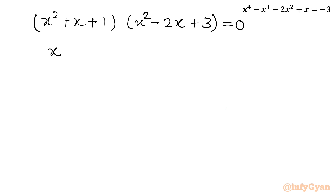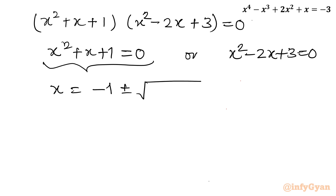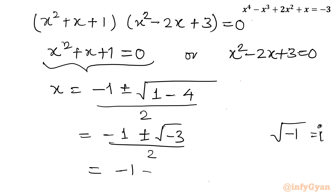Because the product is 0, either x² + x + 1 = 0 or x² − 2x + 3 = 0. Applying the quadratic formula to the first equation: x = (−1 ± √(1 − 4)) / 2 = (−1 ± √(−3)) / 2. Since √(−1) = i, this gives x = (−1 ± i√3) / 2.